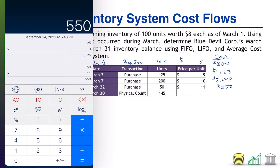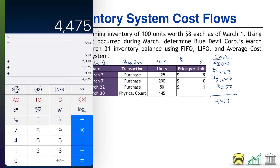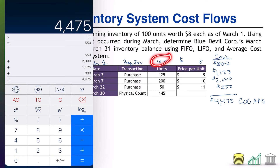Especially when doing an average cost problem, we'll also want to know the total cost of all inventory we have. Adding those up — $550, $2,000, $1,125, and $800 — that comes out to $4,475. That is known as our cost of goods available for sale: all beginning goods plus everything we bought. We also add up total units: 100 plus 125 is 225, plus 200 is 425, plus 50 gives us 475 units available for sale.